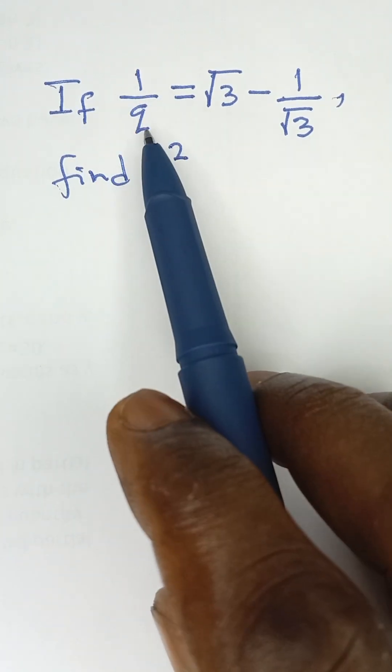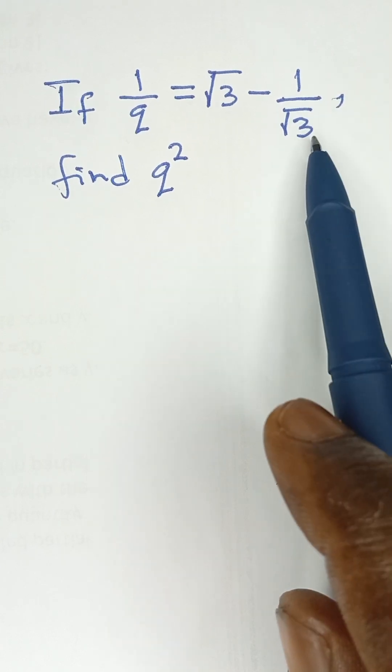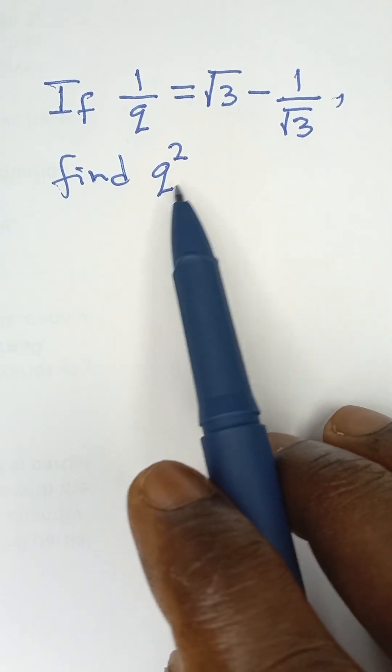If 1 over Q is equal to root 3 minus 1 over root 3, find Q squared.